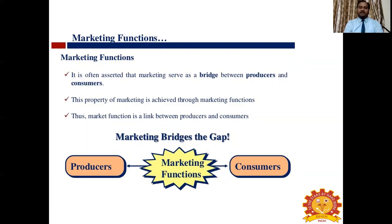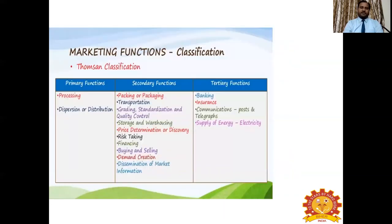Market function is often asserted as serving as a bridge between producer and consumer. Without marketing functions, producers cannot meet their consumers. This property of marketing is achieved through marketing functions. Thus, market function is a link between producers and consumers — it bridges the gap between them.